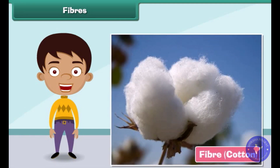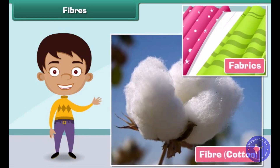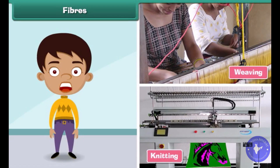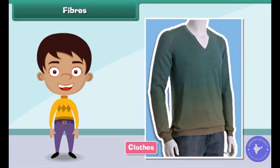Fiber is the raw material used in manufacturing clothes. Fibers are transformed into clothes through a series of steps. First, raw fibers are twisted together to form long strands of threads known as yarns. The yarns are then woven and knitted to form fabrics. Finally, fabrics are used to make clothes of different sizes and shapes to suit the needs of the people.